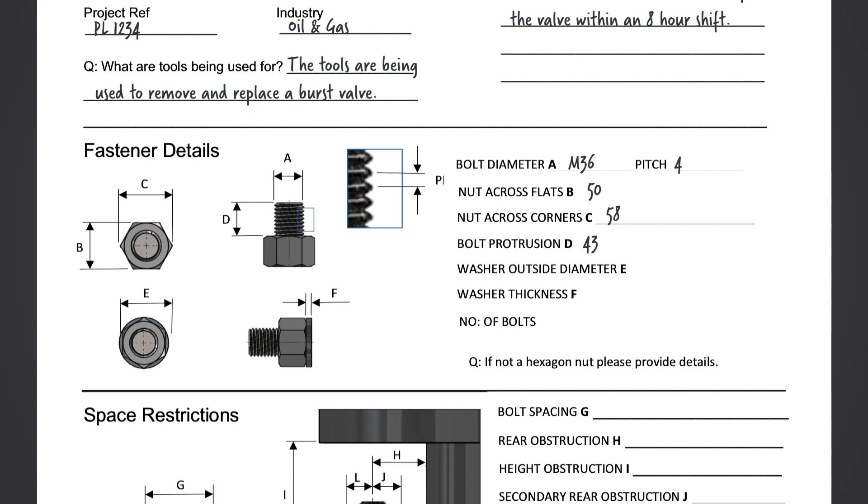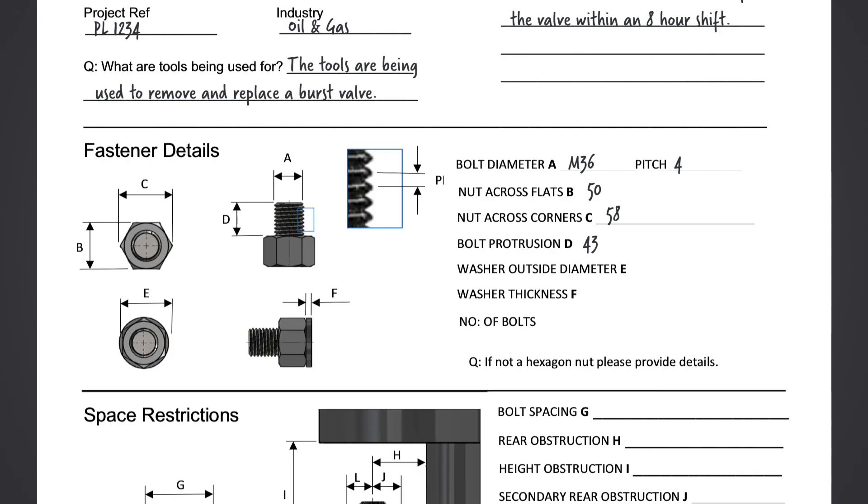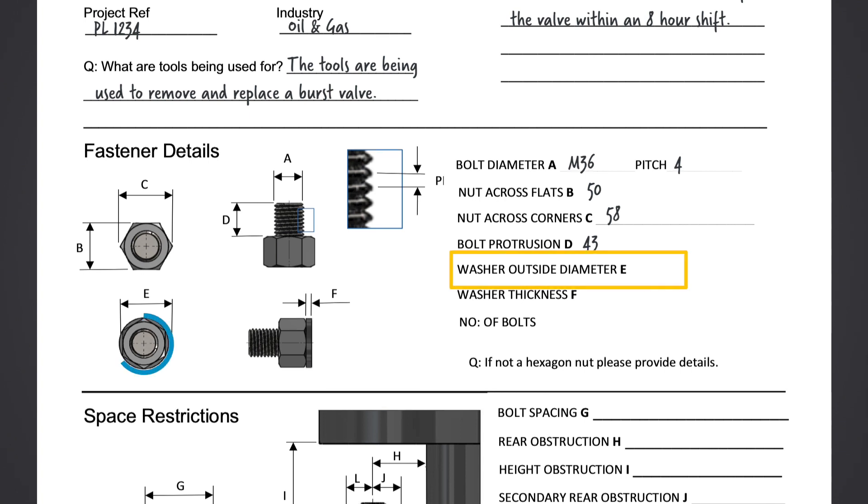Not every application will have a washer, but if one is present we will require the following details in order to design the tool bridge at the correct height. In this example there is no washer on the application. However, this is the distance of outside diameter of the washer. This is the thickness measurement of the washer.